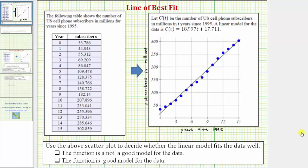The following table shows the number of US cell phone subscribers in millions for years since 1995. The first column gives the number of years since 1995, and the second column gives the number of subscribers in millions.